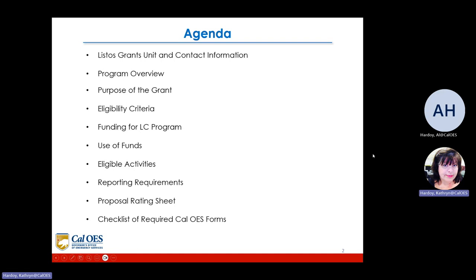The agenda today is: LISTOS grant unit and contact information, program overview, purpose of the grant, the eligibility criteria, funding for the LC program, use of the funds, eligible activities, reporting requirements, proposal rating sheet, and checklists of required Cal OES forms.